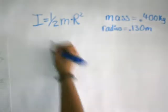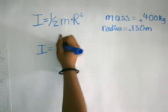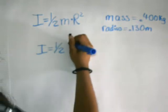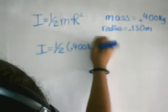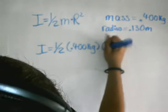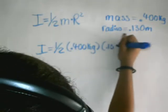So, inertia is equal to one half times 0.400 kilograms times 0.130 meters squared.